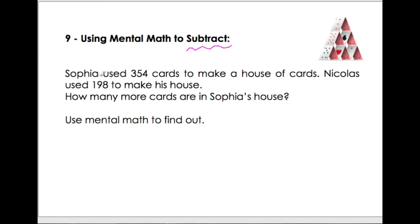So, Sophia used 354 cards to make a house of cards, just like this one, right? And Nicolas, he used 198 to make his house. How many more cards Sophie used than Nicolas? So, use mental math to find out.